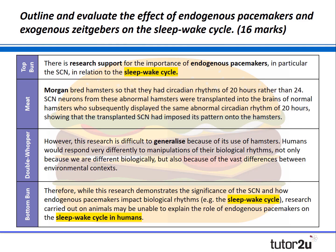There is research support for the importance of endogenous pacemakers, in particular the suprachiasmatic nuclei, in relation to the sleep-wake cycle. Morgan bred hamsters so that they had a circadian rhythm of 20 hours rather than 24. SCN neurons from these abnormal hamsters were transplanted into the brains of normal hamsters, who subsequently displayed the same abnormal circadian rhythm of 20 hours, showing that the transplanted SCN had imposed this particular biological pattern onto the new hamsters.